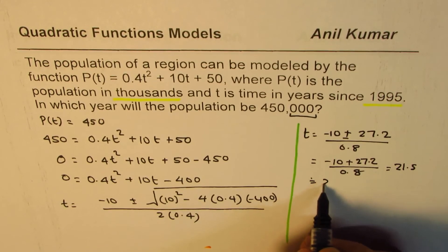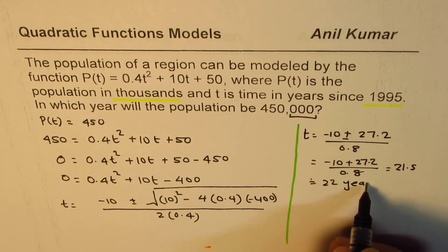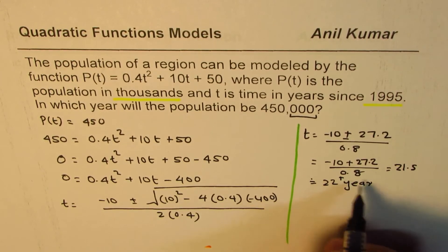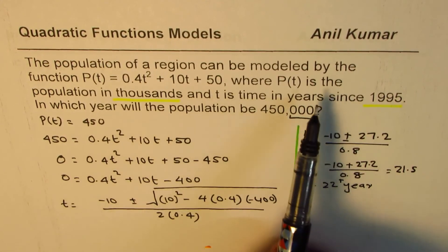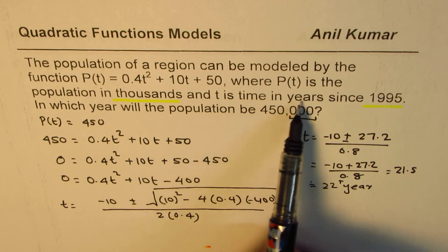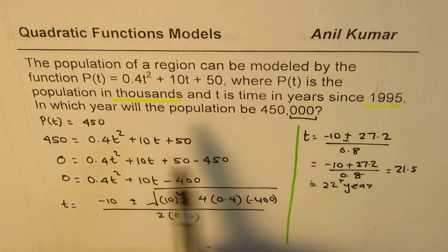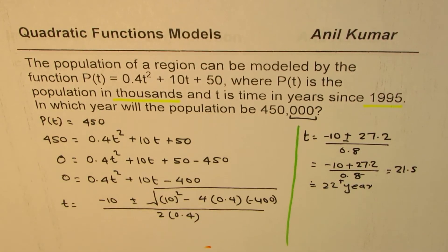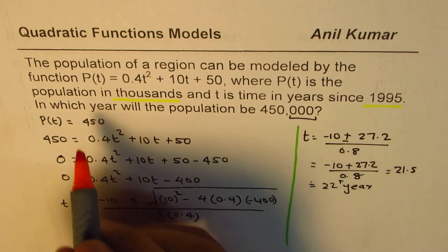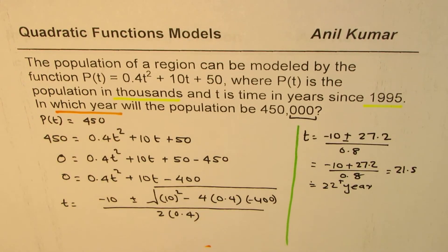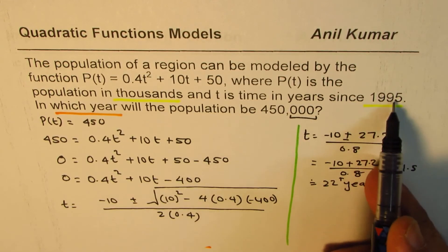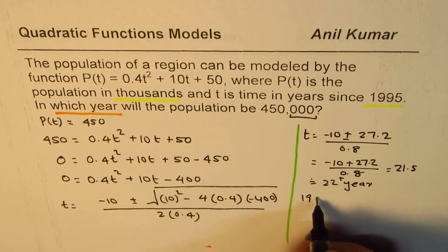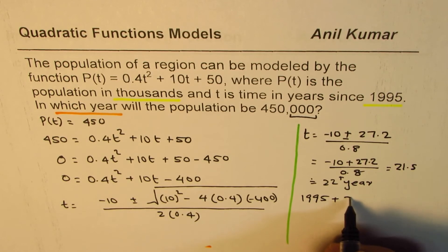That is after 22 years. T is, I mean, plus 22 years. Now it says that t is time in years since 1995. In which year? So the question is, in which year? So it is after 22 years, but the year should be how much? So it should be 22 years after 1995. So it would be 1995 plus 22.